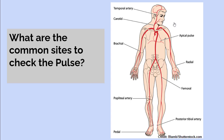What are the common sites to check the pulse? Temporal artery, carotid artery — do not palpate the carotid artery for more than 10 seconds — apical pulse, brachial pulse — used for infants — radial pulse, femoral artery, popliteal artery, posterior tibial artery, and pedal artery.